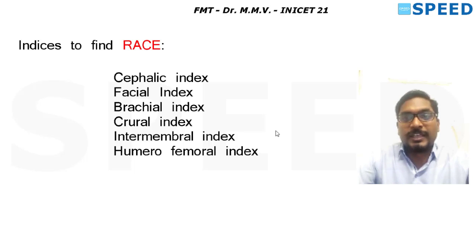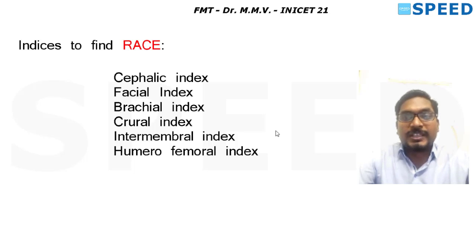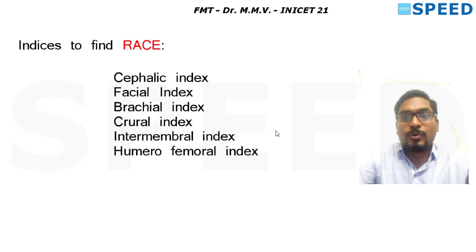A past AIIMS question asked: which index is NOT useful to find race? The six indices useful to find race are: cephalic index, facial index, brachial index, crural index, intermembral index, and humerofemoral index. Remember only these six — all of them have multiplication factor 100.